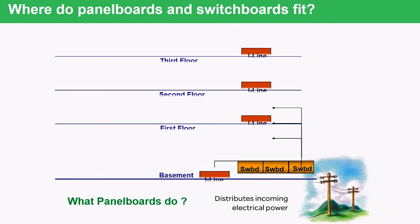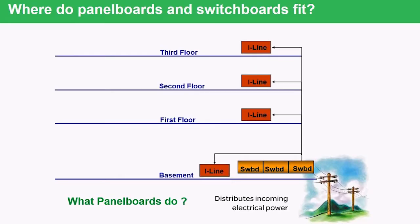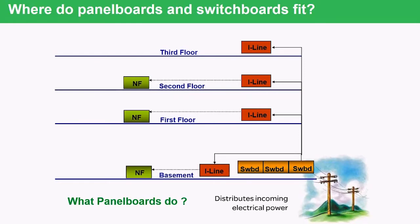From this switchboard, we will break the power down into smaller chunks. It could be fed to an I-line panel board in the same room as the switchboard, or they could be on different floors of the building. These I-line panel boards will break the amperage down into smaller pieces, feeding panel boards. In this particular picture, we're looking at a 480-volt switchboard feeding I-line breakers and I-line panel boards that are feeding NF panel boards.